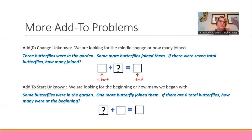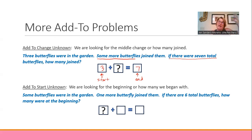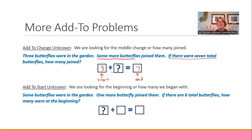Here's the change unknown problem: three butterflies were in the garden — so we know we're starting with three. Some more butterflies joined them. If there were seven total, how many joined in the middle? We know what we're starting with and ending with; we want to know that middle change. Students might be using linking cubes, picture models, or number bonds — I'm not saying they'll fill in equation blanks right away. But as teachers, we know they're starting with a number and ending with a number, and we want to know what that change is in between.